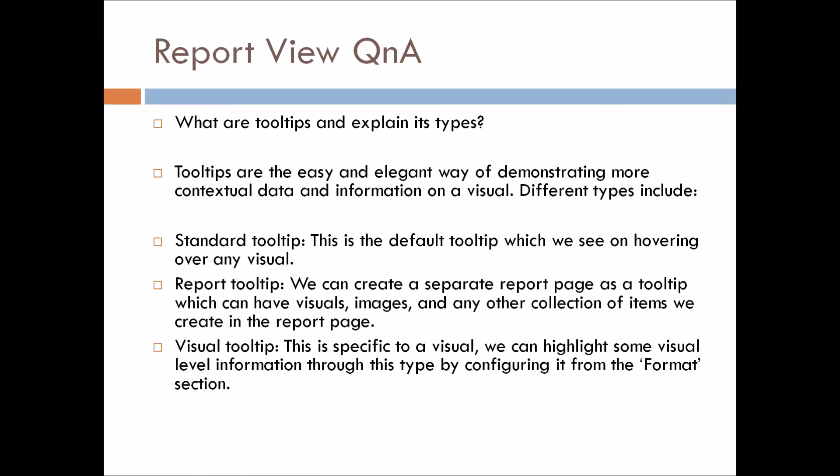What are tooltips and what are their types? Tooltips are an easy and elegant way of demonstrating more contextual data and information on a visual. The first type is the standard tooltip — this is the default tooltip we see on hovering over any visual. The second is the report tooltip, for which we create a separate report page as a tooltip that can have visuals, images, and other elements. The third is the visual-level tooltip, which is specific to a visual and can be configured from the format section.